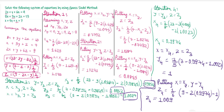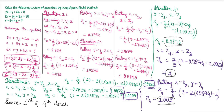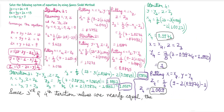We have obtained nearly equal approximations. Since the third and fourth iterations are nearly equal, the approximate solution of the system of equations is x = 1, y = 1, and z = 1. In the Gauss-Seidel method, we start with initial approximation x0, y0, z0, and immediately use updated values in subsequent equations within the same iteration.